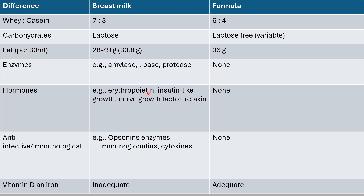Hormones in breast milk include erythropoietin, insulin-like growth factor, nerve growth factor, relaxin, and others — none of these are in formula. Anti-infective and immunological components include opsonins, enzymes, immunoglobulins (such as IgA), and cytokines — none in formula. Importantly, vitamin D and iron are deficient in breast milk; that's why we recommend starting vitamin D from birth and iron from four months for exclusively breastfed infants. This amount of vitamin D and iron is adequate in iron-fortified formula.